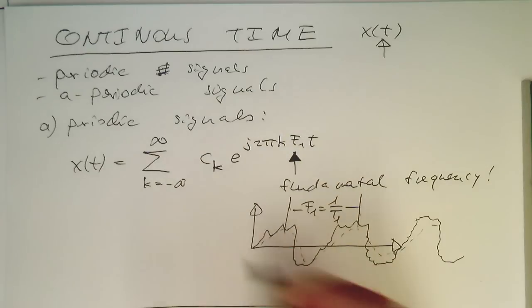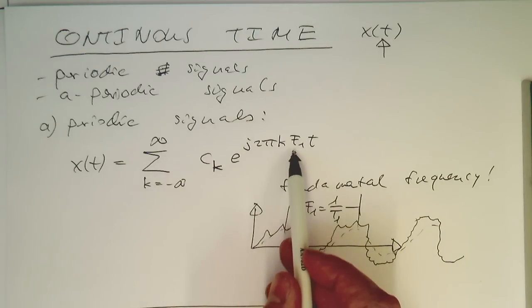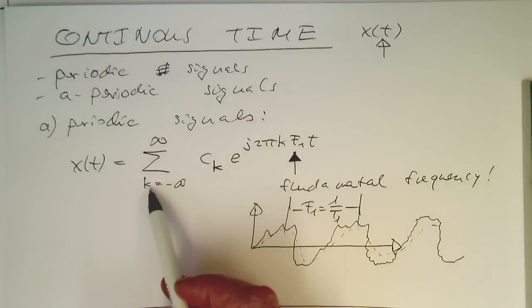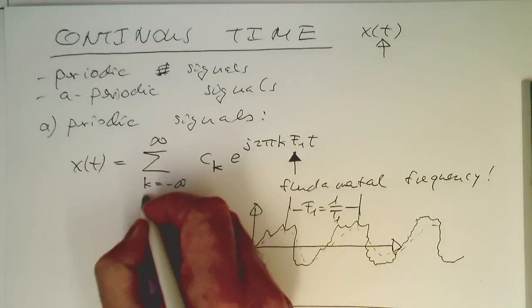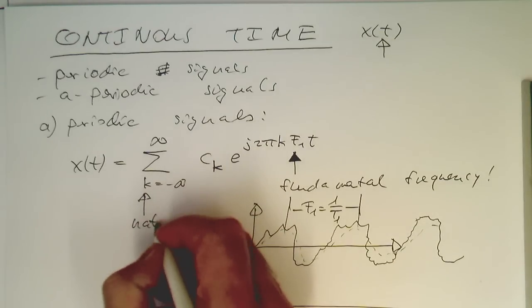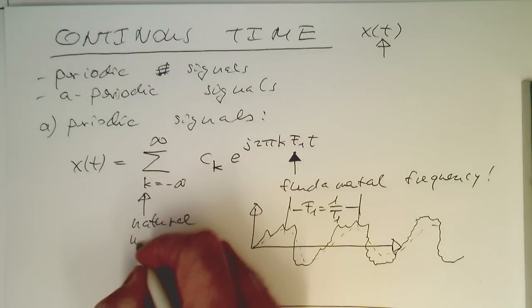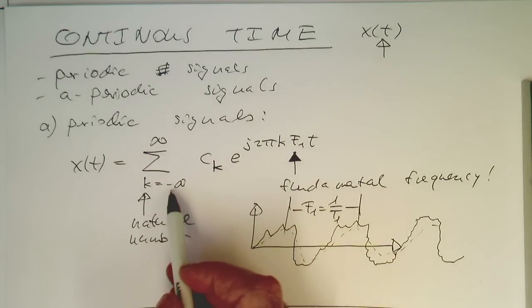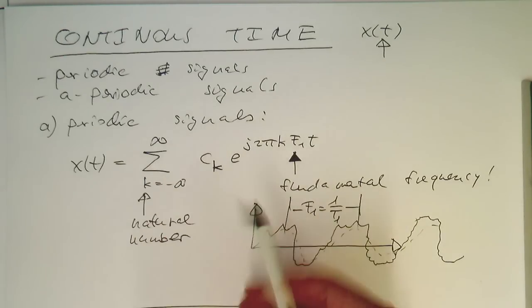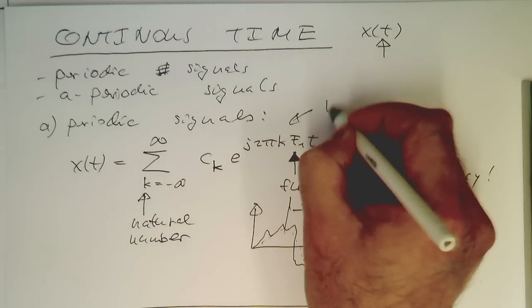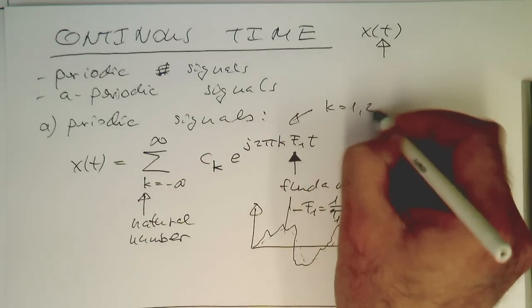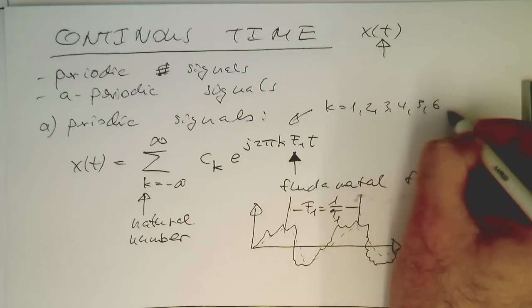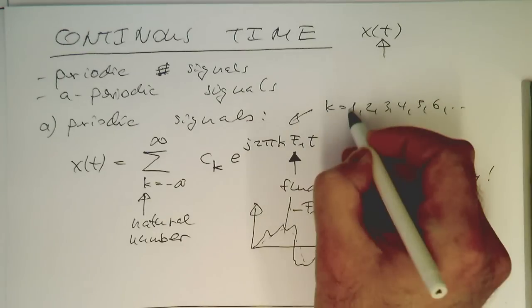The interesting thing is that all other frequencies represented here are higher than this f1. We see this k factor here. This k is a natural number. This runs from minus infinity to plus infinity, but k can be only 1, 2, 3, 4, 5, 6, and so on.